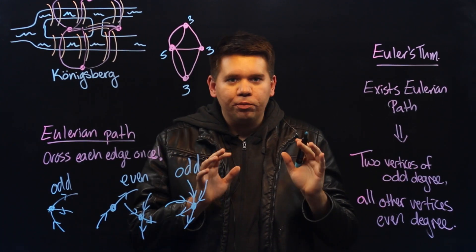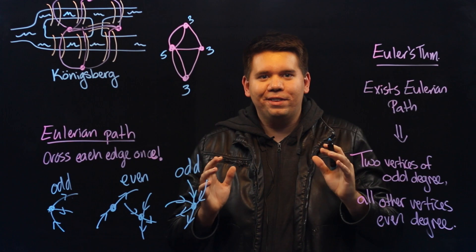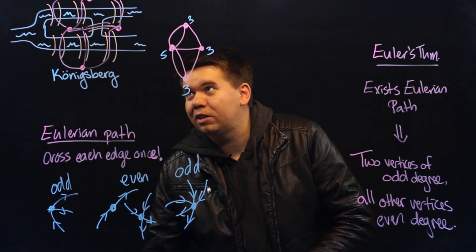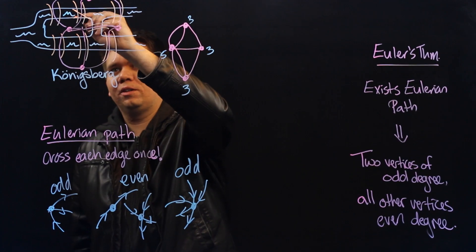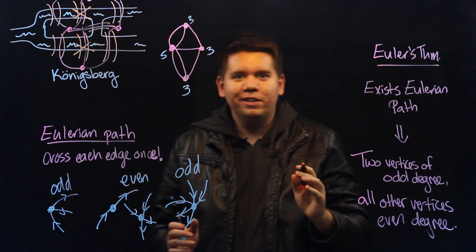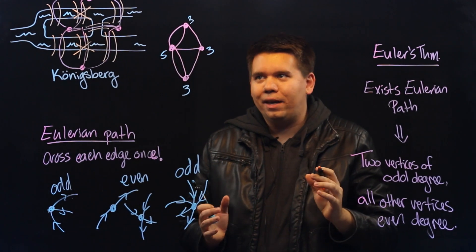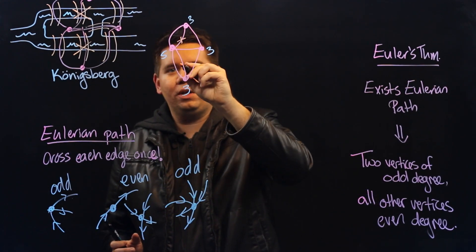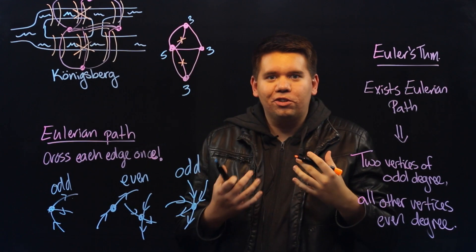Incidentally, in World War II, the Soviet Union bombed the city. And as a result, two of the bridges were destroyed. So thanks to this bombing campaign, by destroying two of the bridges, they changed the degree of the vertices.